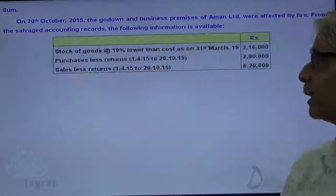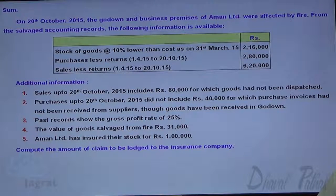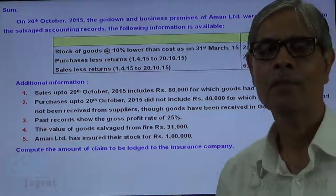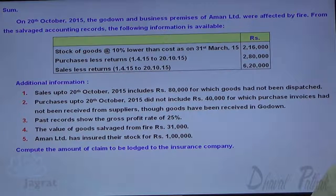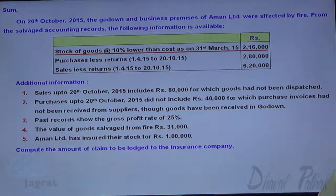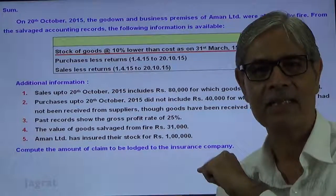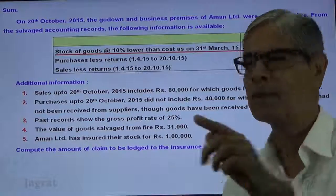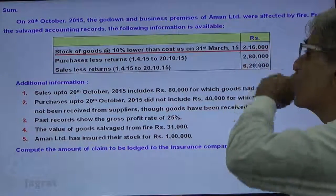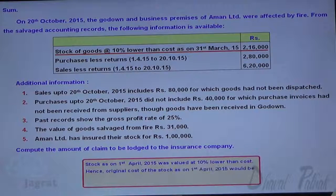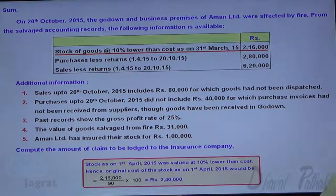Now let me explain the important points of this sum. The stock of goods is 10% lower than cost. As stated, opening stock is to be recorded at cost. Since the given value is 90%, we have 90% equal to the given value. So 2,16,000 divided by 90% gives the cost of goods — that is 2,40,000 — which will be recorded in the memorandum trading account.